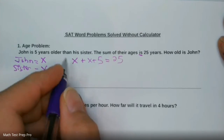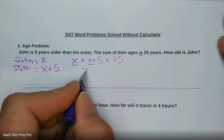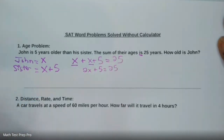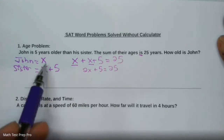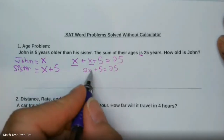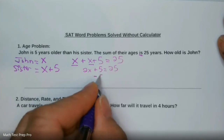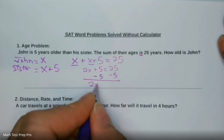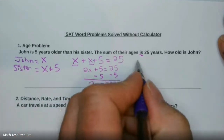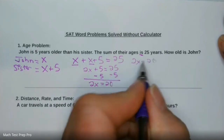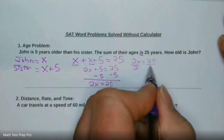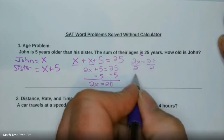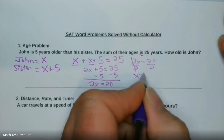Let's do some math. We can combine like terms — we've got two X's — that's 2X plus 5 equals 25. Now, if we solve for X, we're going to know what John's age is. To solve for X, we're going to subtract 5 on both sides, and that leaves 2X equals 20. Then divide each side by 2, because that's 2 times X. In order to undo that and leave X by itself, we divide by 2 on each side. The 2s cancel out — X equals 20 over 2, which is 10.